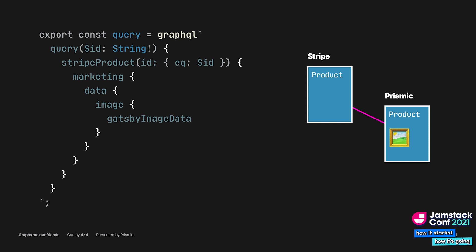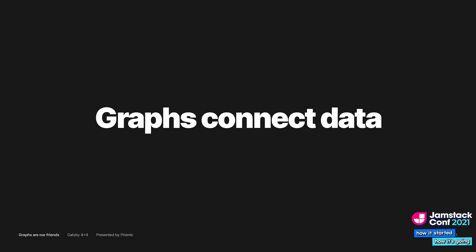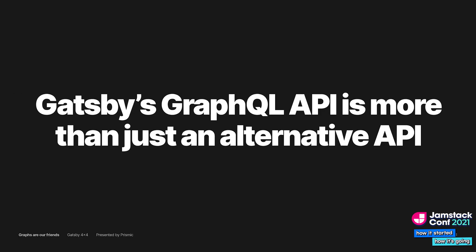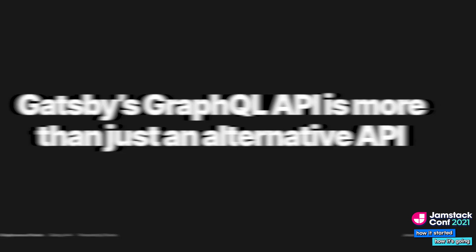Stripe and Prismic don't need special integrations to make this work. Instead, you configure Gatsby to integrate the two. Creating relationships like this is not limited to just Stripe and Prismic — graphs thrive at connecting data. When you're building complex sites and making use of multiple services, use Gatsby's GraphQL API to your advantage. Let the plugin ecosystem do most of the work for you and enhance it wherever needed.